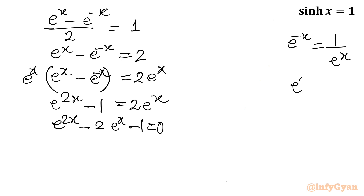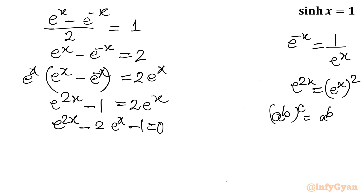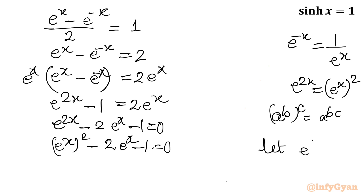Now e^(2x) can be written as (e^x)², using the property a^(b·c) = (a^b)^c. So the equation becomes (e^x)² - 2·e^x - 1 = 0. I substitute e^x = y, and this equation converts into the quadratic: y² - 2y - 1 = 0.